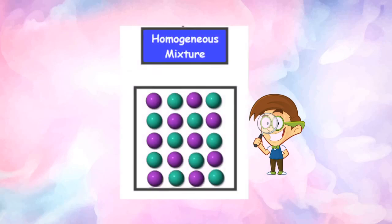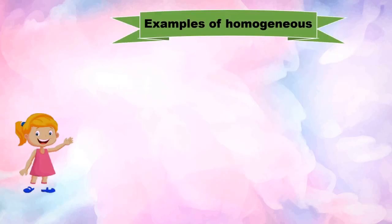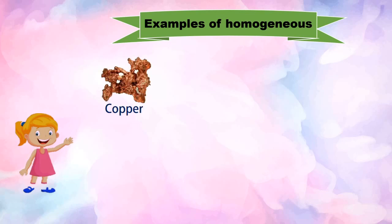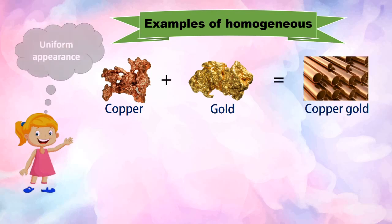Looking closely at the particles of a homogeneous mixture, its components — represented by green circles and violet circles — are evenly distributed throughout the mixture. Here are examples of homogeneous mixtures: copper, which is solid, combined with gold, which is also solid, yields a copper-gold alloy that appears uniform to our eyes. We cannot identify copper from gold in this mixture.